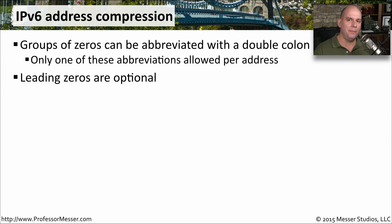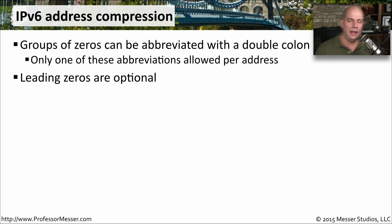In our previous example, there was a double colon in the IPv6 address because it was a compressed IPv6 address — sections of zeros were replaced with a double colon to make the address easier to read. Additionally, if there are leading zeros in a section of an address, you can remove them to compress the address down even further. Let's do an example of this.